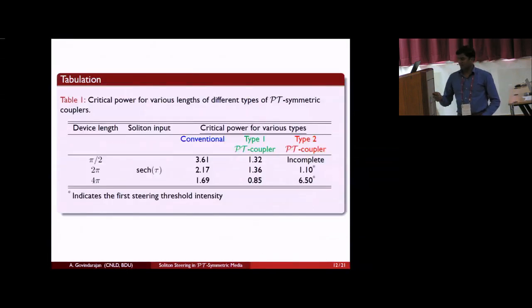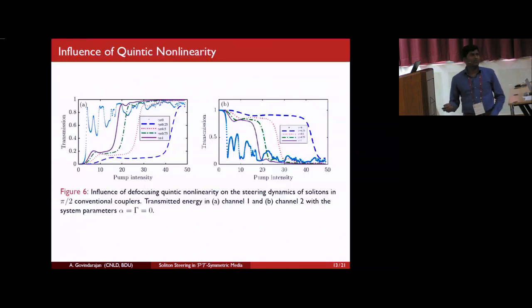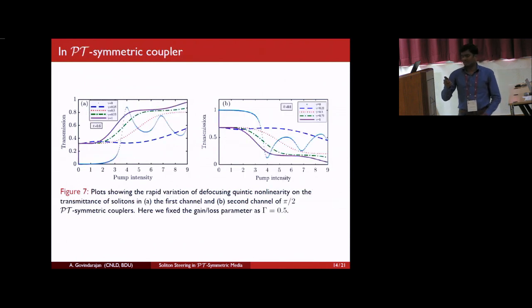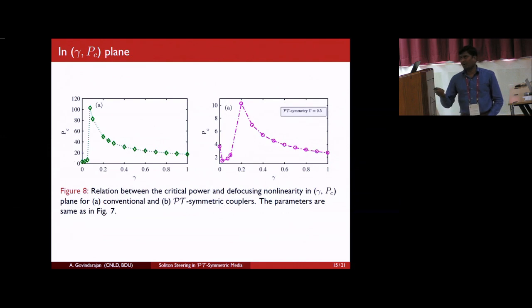These values have been tabulated. From the tabulation, we observe that in type 1 PT-symmetric fiber coupler, the critical power is inversely proportional to the length of the device. Now we move on to analyze the influence of quintic nonlinearity in conventional systems. Obviously, it exhibits some unwanted results. See, there are severe oscillations and it takes huge pump intensity to steer the pulse. But once again, if we include the PT-symmetric effect, it dramatically cancels all the oscillations and also makes the steering ultra-fast. Here, the switching has been completely perfect. These results have been plotted in gamma-Pc plane. From these figures, you can observe that the critical power in PT-symmetric fiber couplers has been reduced by a factor of 10. Maybe in optical systems, it is a wonderful effect.